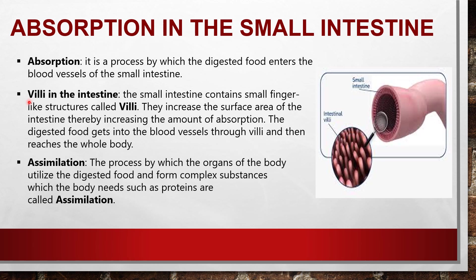Now look at the picture of the inner side of the small intestine. You can see some finger-like projections — those finger-like projections are called villi. The small intestine contains small finger-like structures called villi. They increase the surface area of the intestine, thereby increasing the amount of absorption. The function of villi is to increase the surface area of the intestine.